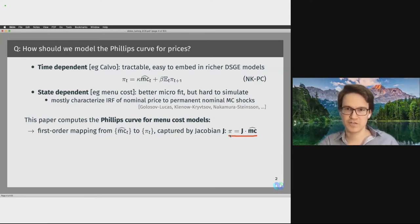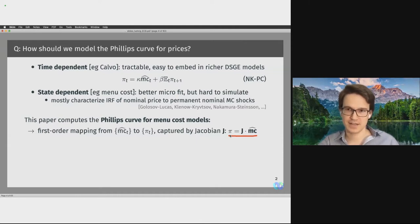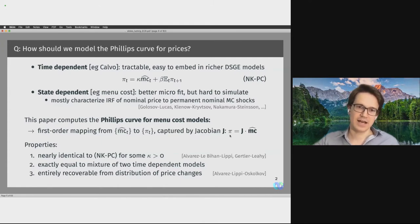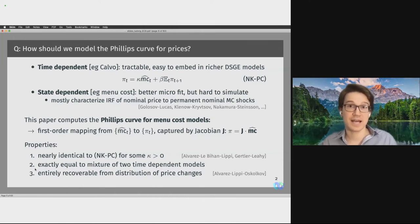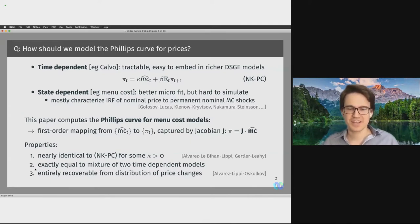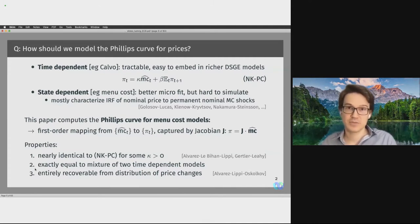That matrix is what we call the Phillips Curve Jacobian — our notion of a Phillips Curve. Notice that the NKPC corresponds to a specific J, and we are going to compute this J for menu cost models. Once this J is computed, any given shock sequence to real marginal cost can be fed into this equation to get the resulting impulse response of inflation. Armed with this Phillips Curve Jacobian, we have three main results. First, the analog of the NKPC for the menu cost model looks numerically nearly identical to the actual NKPC from a Calvo model. Second, there is an exact equivalence result — not to a Calvo model, but to a mixture of two time-dependent models.